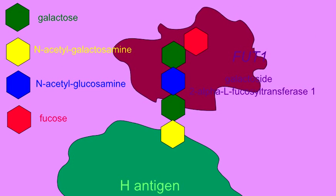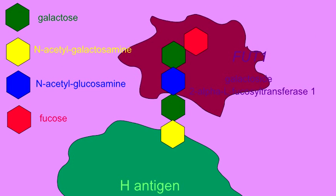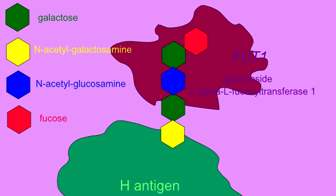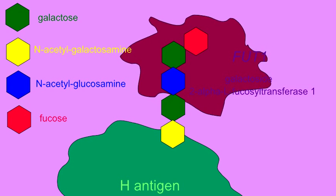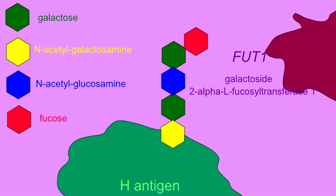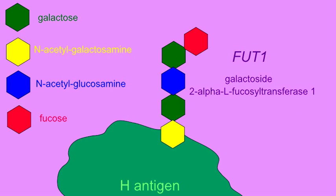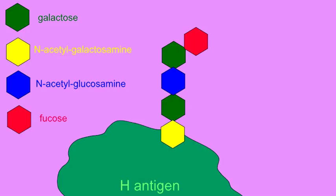which is added by the enzyme FUT1, or galactoside 2-alpha-L-fucosyl transferase. This is an important reaction because once this is done, this protein and sugar chain is considered to be the H-antigen.